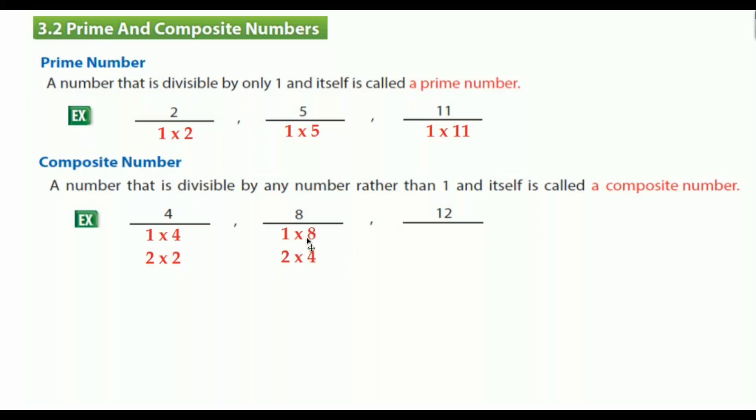More than 2 factors, so 8 is a composite number. Let's look at the last example: 12. How can we get 12 by multiplying? 1 times 12, 2 times 6, and 3 times 4. So 12 is a composite number.